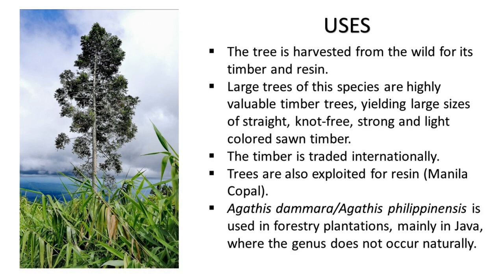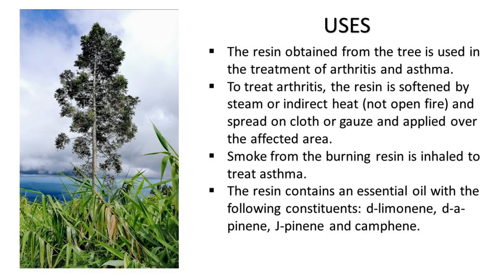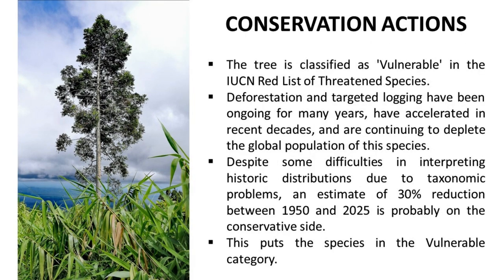Agathis dammara / Agathis philippinensis is used in forestry plantations, mainly in Java where the genus does not occur naturally. The resin is used medicinally in the treatment of arthritis and asthma. To treat arthritis, the resin is softened by steam or indirect heat — not open fire — spread on cloth or gauze, and applied over the affected area. Smoke from burning resin is inhaled to treat asthma. The resin contains an essential oil with constituents including d-limonene, d-α-pinene, j-pinene, and camphene.